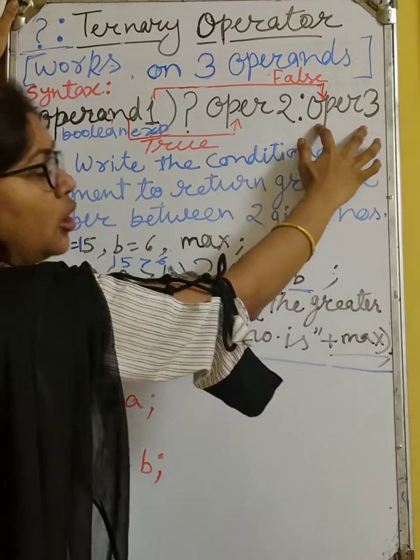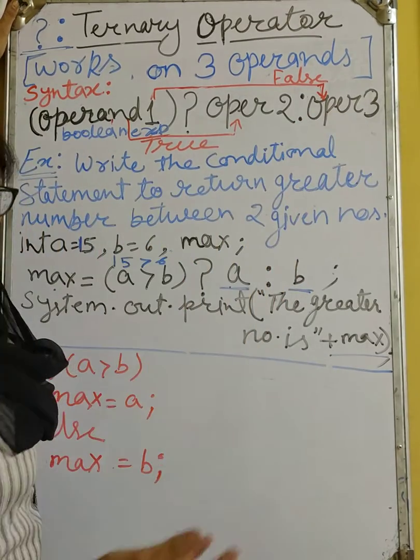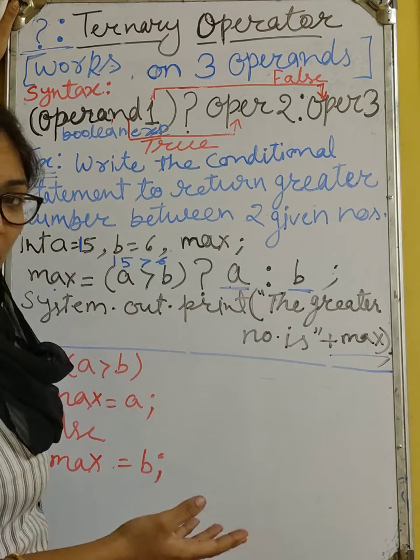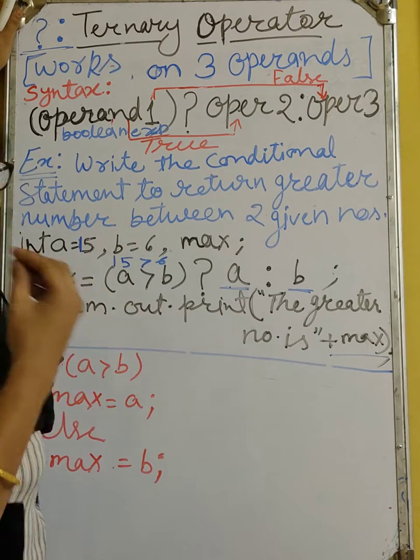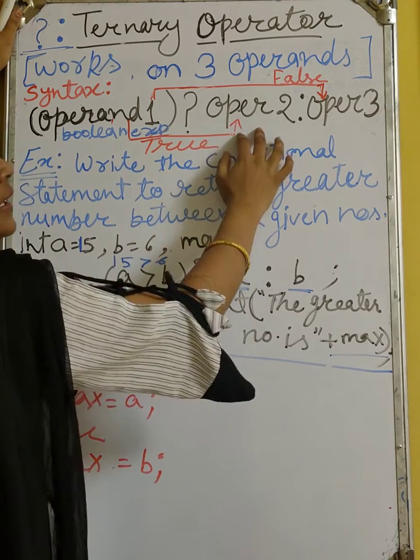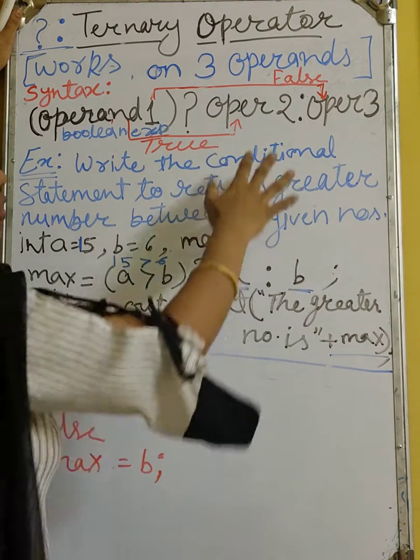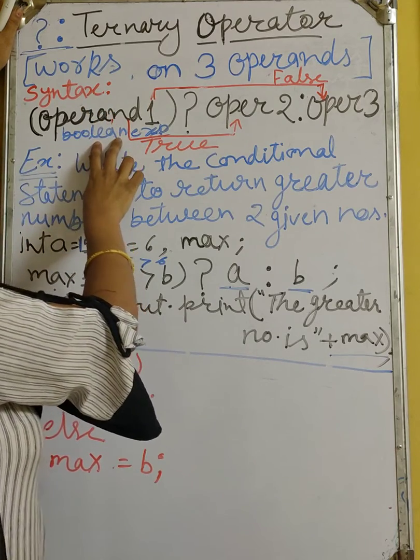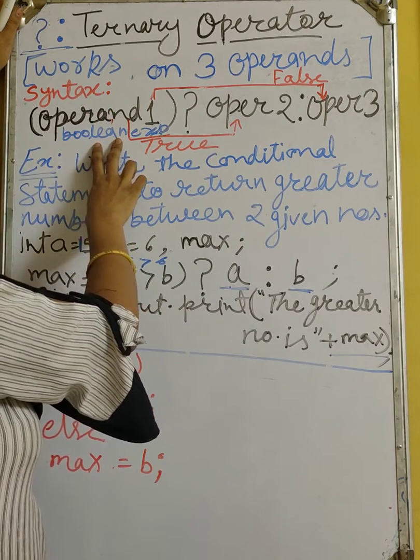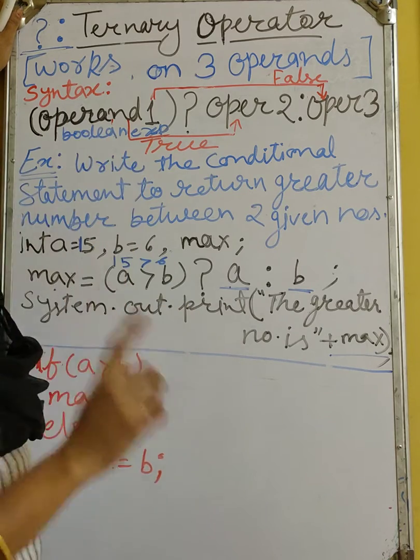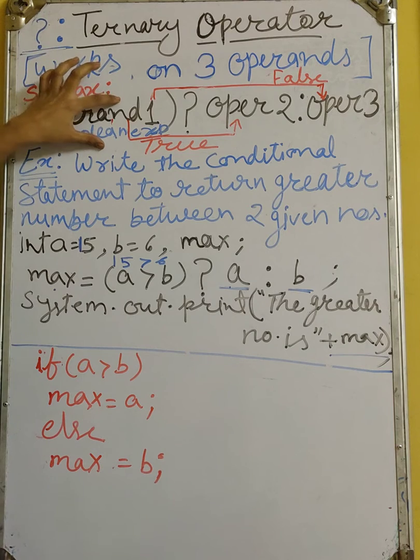Now operand 2 and operand 3 can be any value, can be any variable or even you can write any expression to solve or return. But in operand 1, you have to write only the expression which is going to return true or false. Means boolean expression only accepted in operand 1.